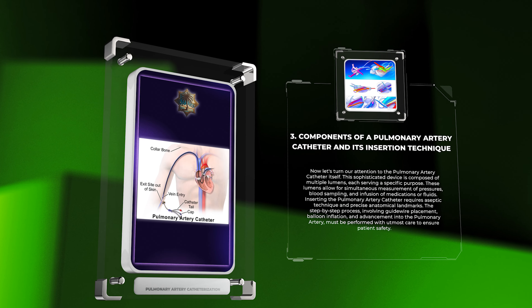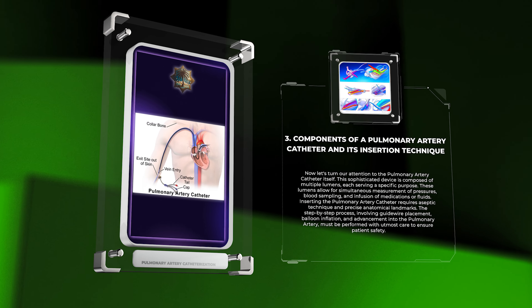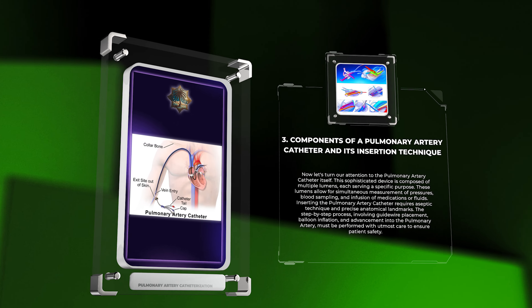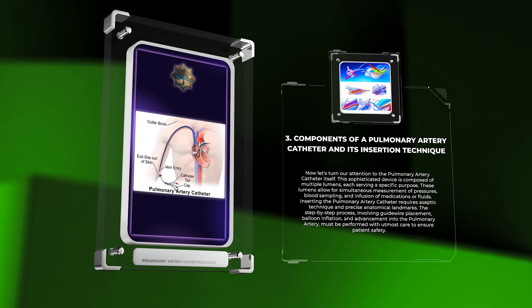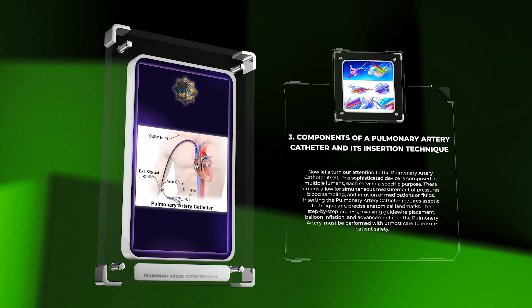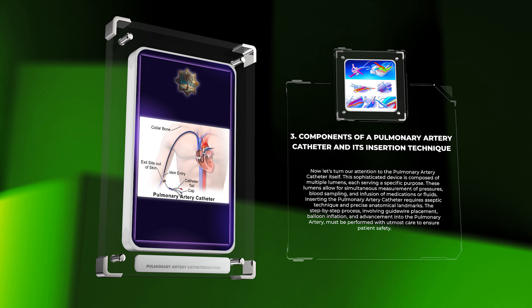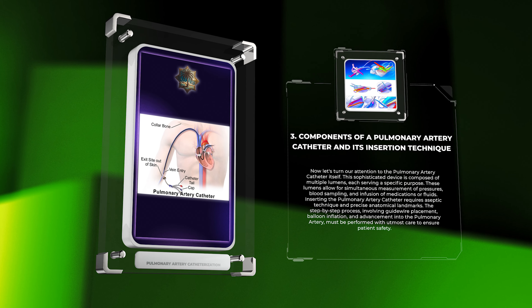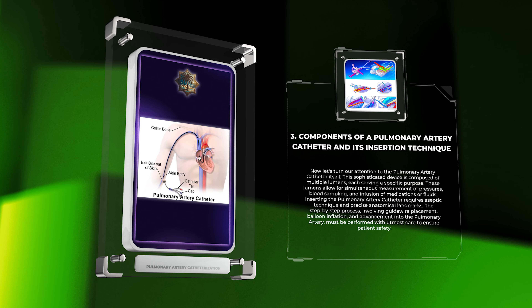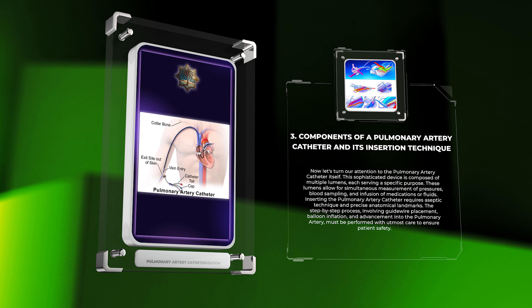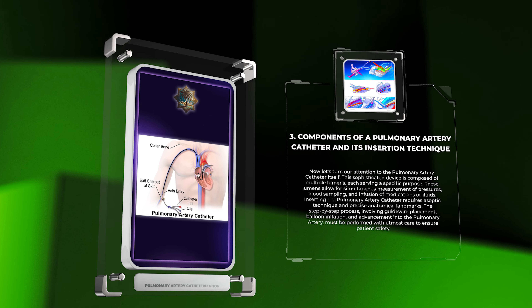Inserting the pulmonary artery catheter requires aseptic technique and precise anatomical landmarks. The step-by-step process, involving guidewire placement, balloon inflation, and advancement into the pulmonary artery, must be performed with utmost care to ensure patient safety.